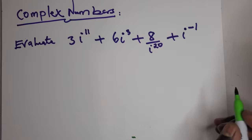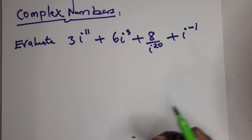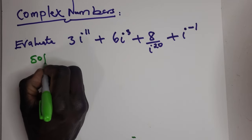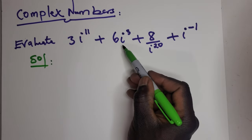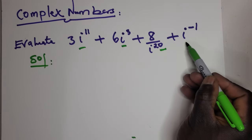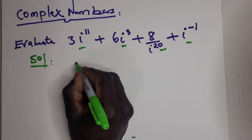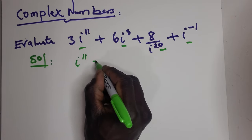If you are given the power i^n to evaluate, I will show you how to do that. Solution: Now you have to deal with all the i's because of the powers. So i to the power of 11...